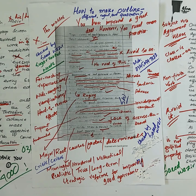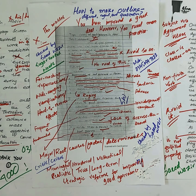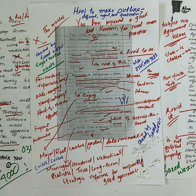Assalamu alaikum, my name is Syed Wazir. I have been teaching CSS English Essay, Précis, and Current Affairs for the last seven years in Islamabad. Dear students, today we will talk about how to make an outline — how to make an outline that is different, cogent, qualitative, persuasive, and argumentative.